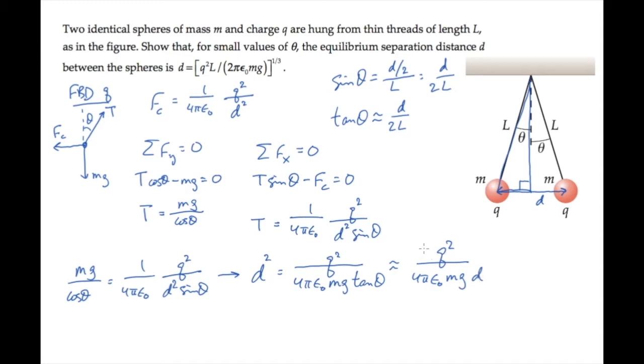That gives us this expression, which has another d in the denominator. So when we move it to the left-hand side and simplify, we find that the equilibrium separation distance d is given by this expression, which is what we were asked to find in the problem statement.